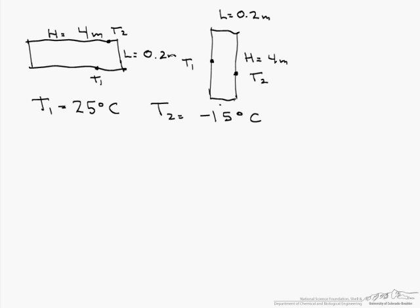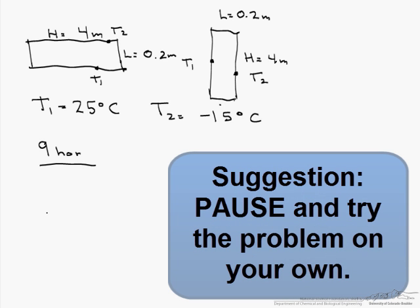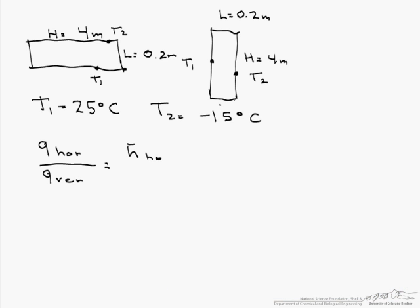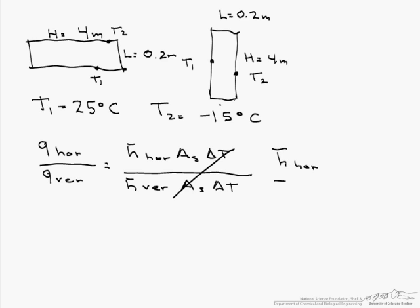So we are going to compare the heat transfer rate for the horizontal section with that of the vertical section. This is q_horizontal equals H_hor A_s delta T compared to q_vertical equals H_ver A_s delta T. Since A_s and delta T are exactly the same for the two, what we are really looking at is the comparison of our heat transfer coefficients.